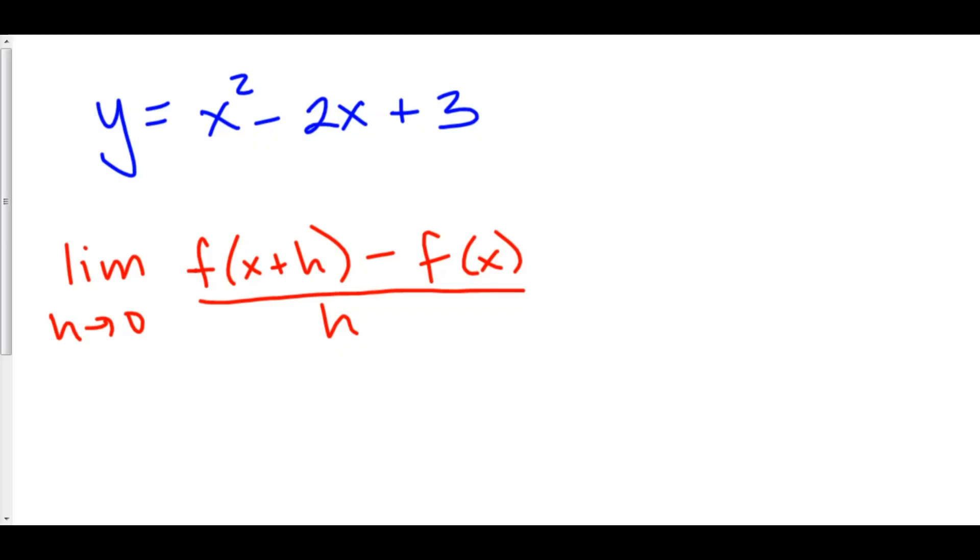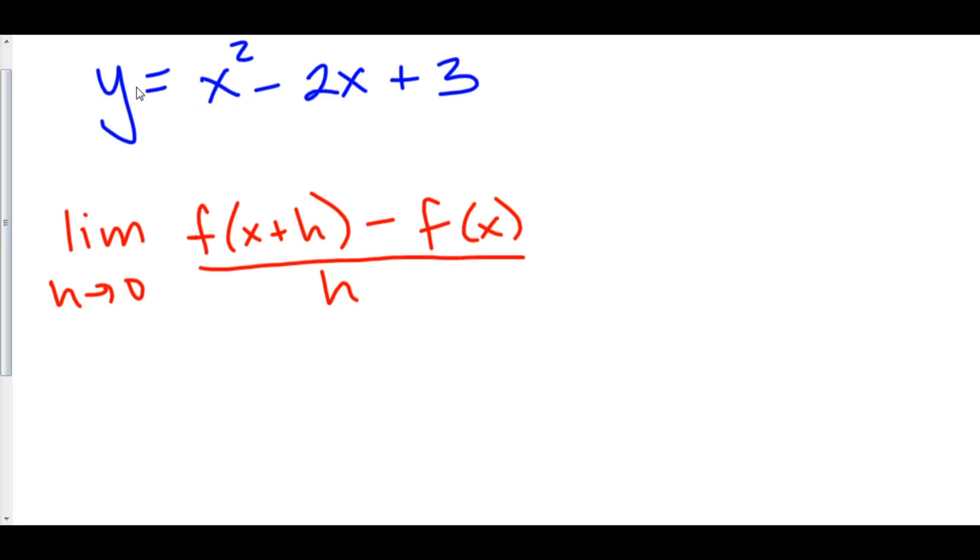Let's use the definition of the derivative to find the derivative of y equals x squared minus 2x plus 3. What this function is telling us to do is take our stuff, square it, minus 2 times stuff, and then plus 3.